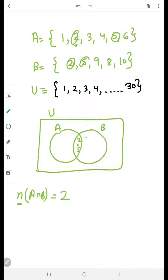So here I am filling these two elements which are common. Then what is A? It is 1, 3, 4, 6. So 1, 3, 4, 6.